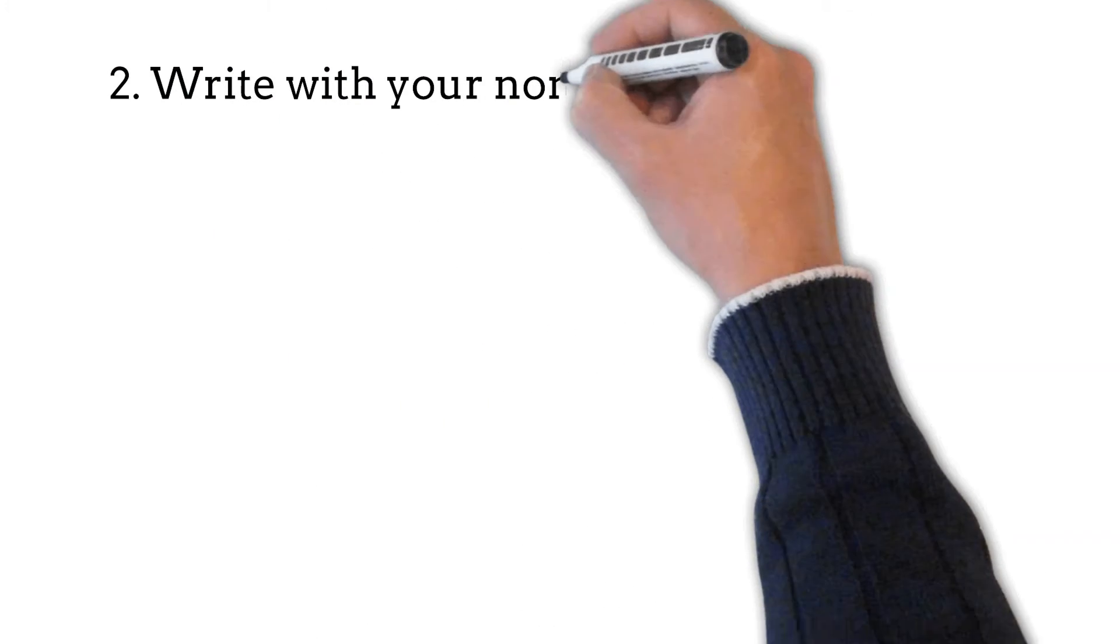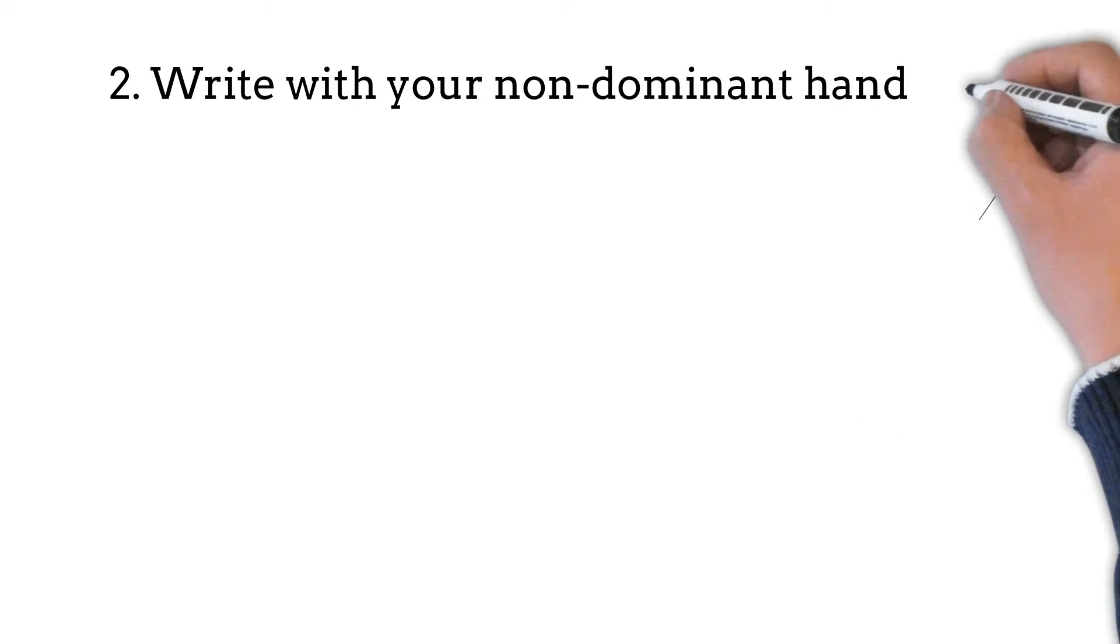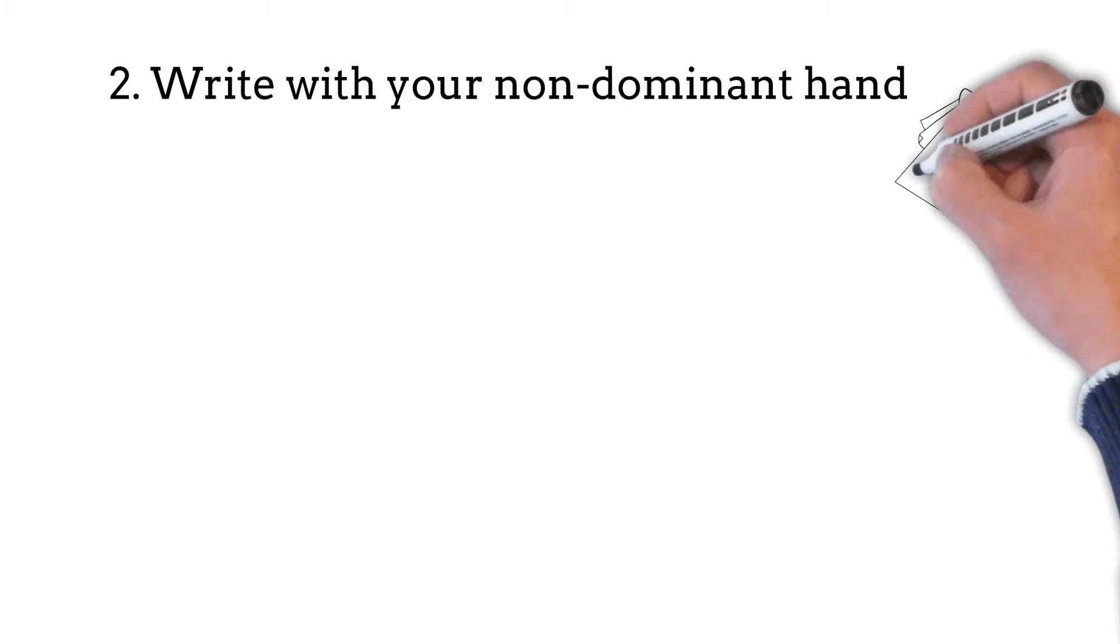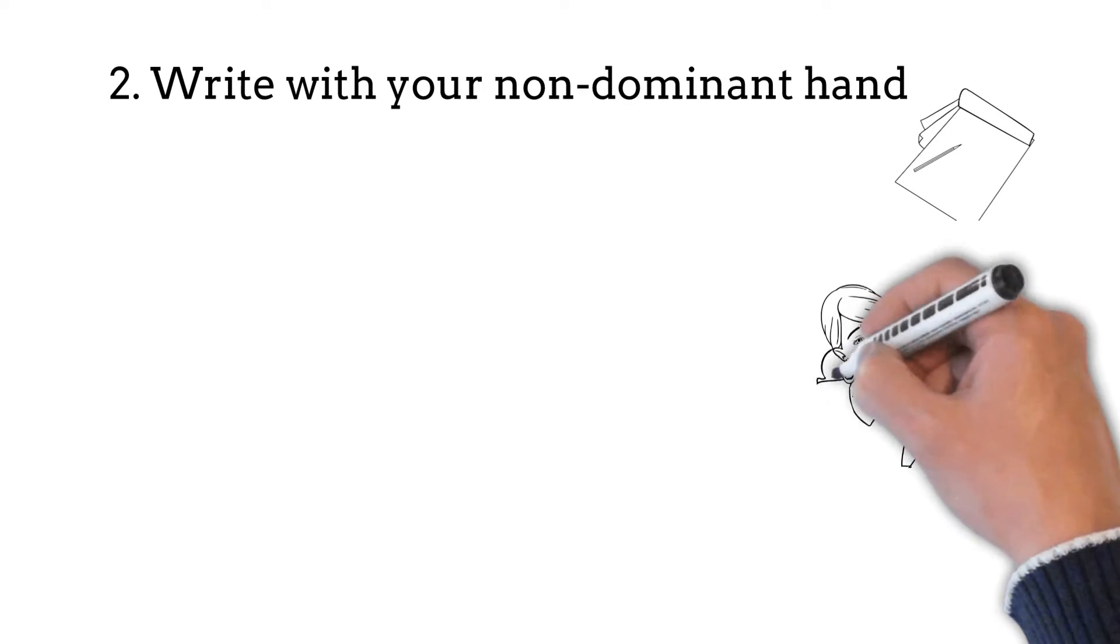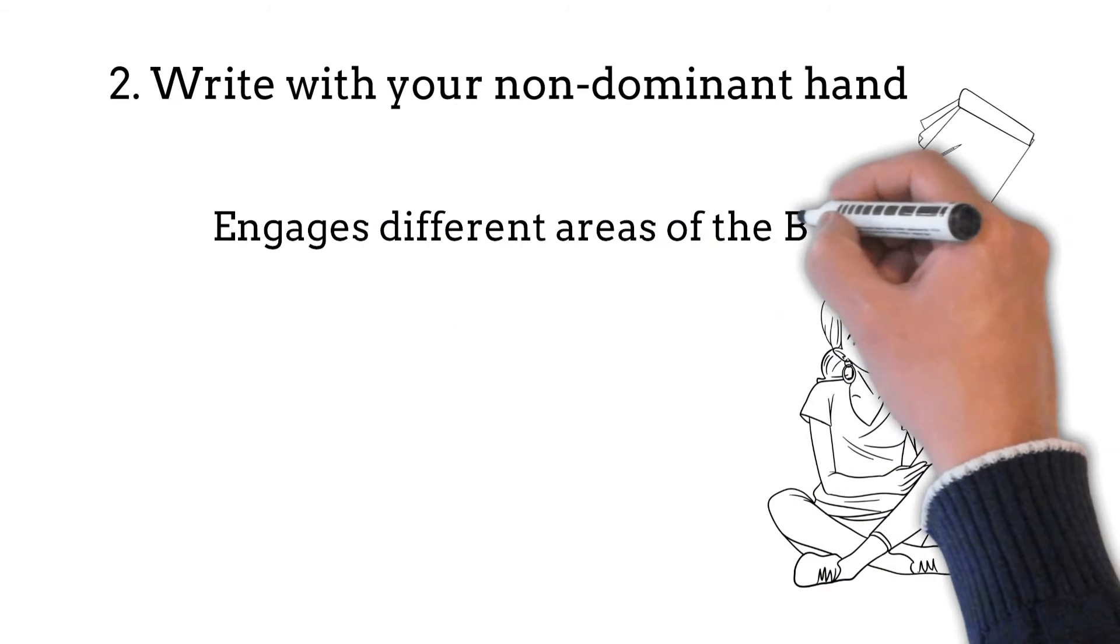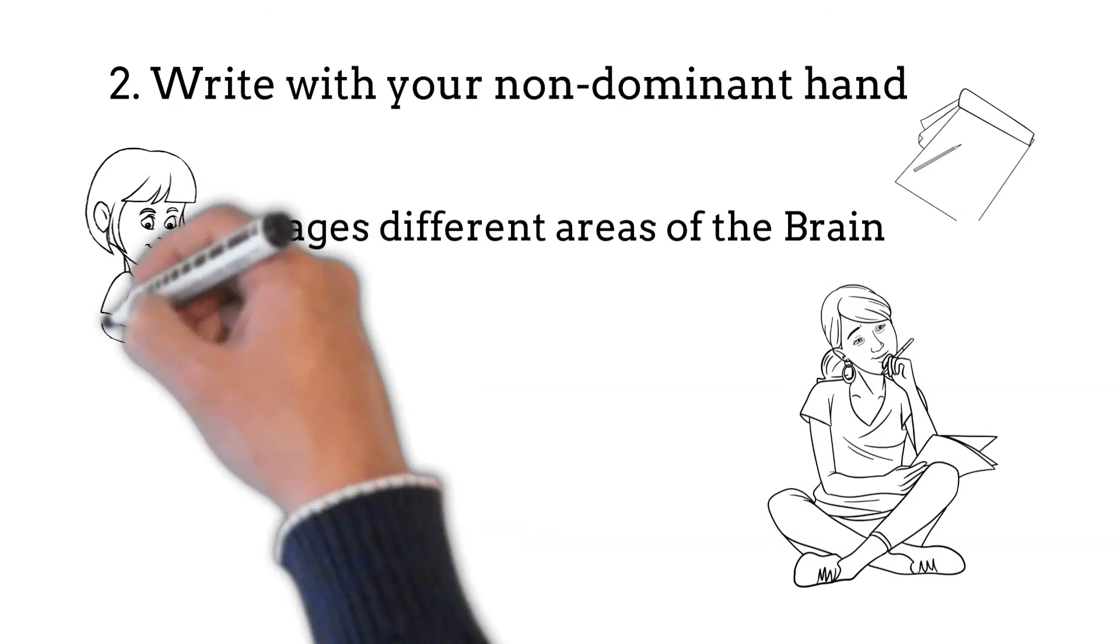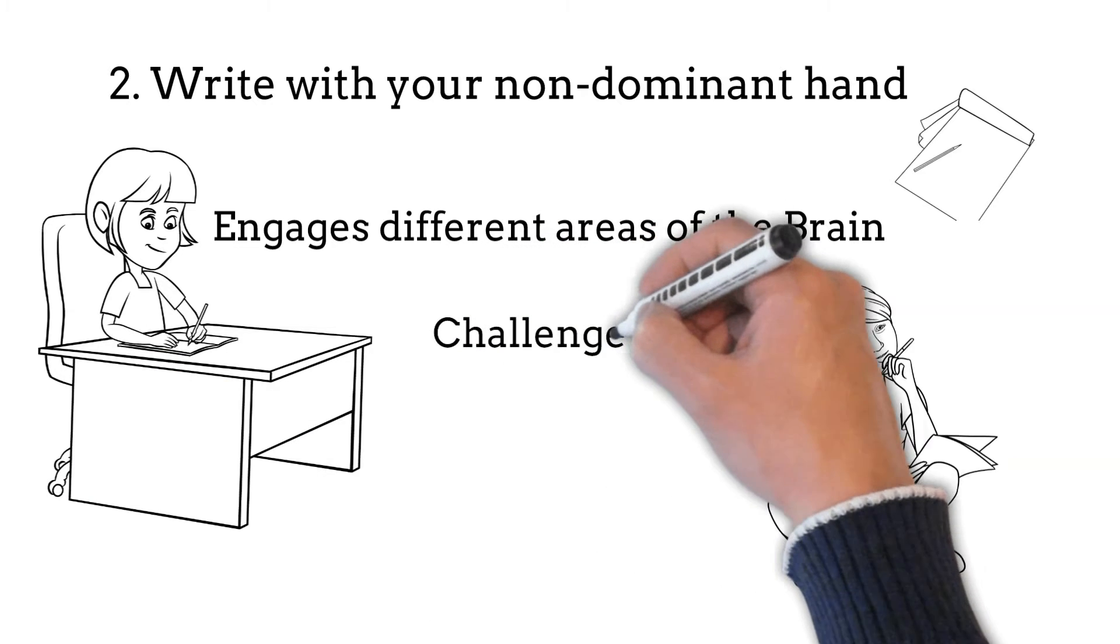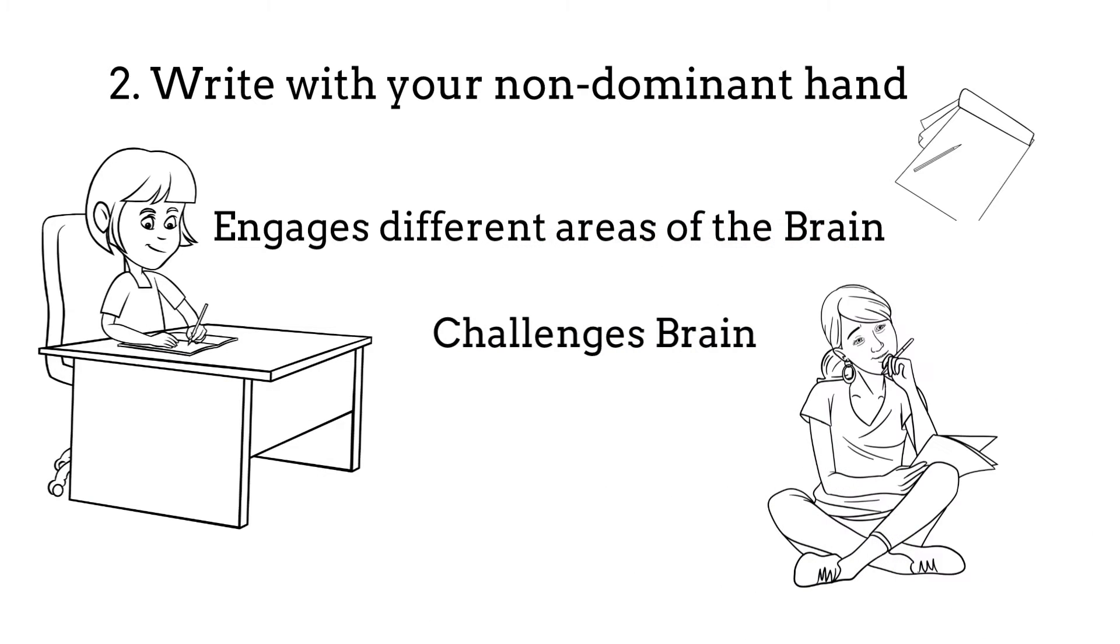2. Write with your non-dominant hand. Writing or drawing with your non-dominant hand is a wonderful way to engage different areas of your brain. It can be done anytime and it only requires a pen and paper. When you use your non-dominant hand, you will be challenging your brain to function in a new way. This becomes a great brain exercise.